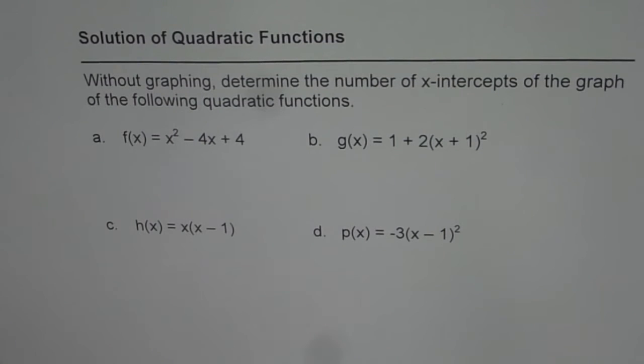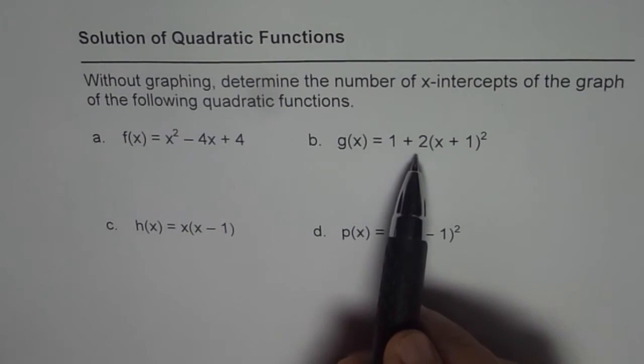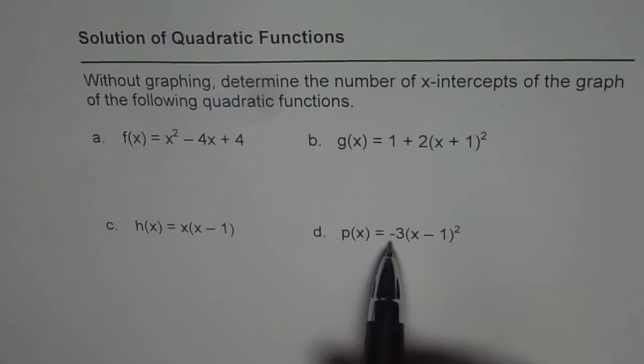The first one is f of x equals x squared minus 4x plus 4, which is in standard form. Then we have g of x equals 1 plus 2 times (x plus 1) squared, which is in vertex form. And then h of x equals x times (x minus 1) in factored form, and p of x equals minus 3(x minus 1) squared, which is mixed, you can say, vertex or factored form.